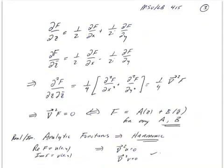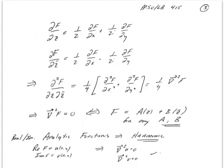Finally, we can use these expressions to understand the relationship between analytic functions and Laplace's equation in two dimensions even more transparently. If we rewrite ∂F/∂z as (1/2)·dF/dx + (1/2i)·dF/dy, and ∂F/∂z-bar as (1/2)·dF/dx − (1/2i)·dF/dy, and then compute the second derivative ∂²F/∂z∂z-bar, we get (1/4)(d²F/dx² + d²F/dy²). The cross terms cancel, so ∂²F/∂z∂z-bar is just one quarter of the Laplacian ∇²F in two dimensions.